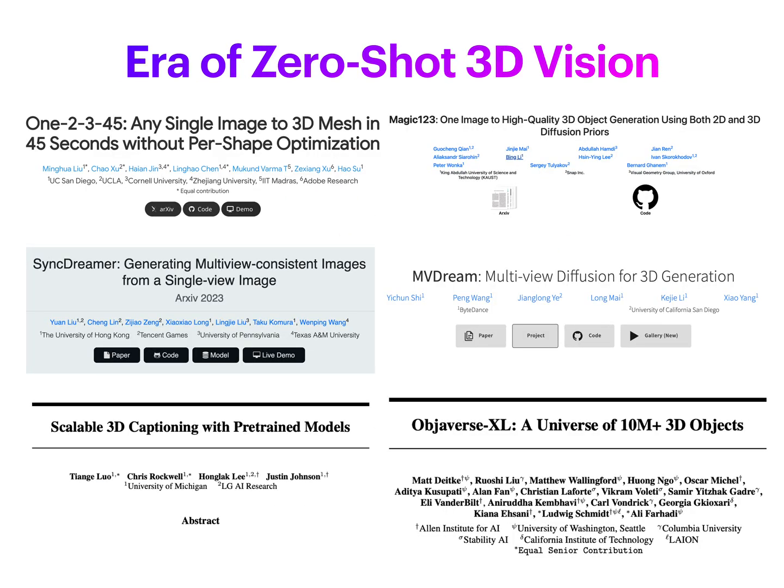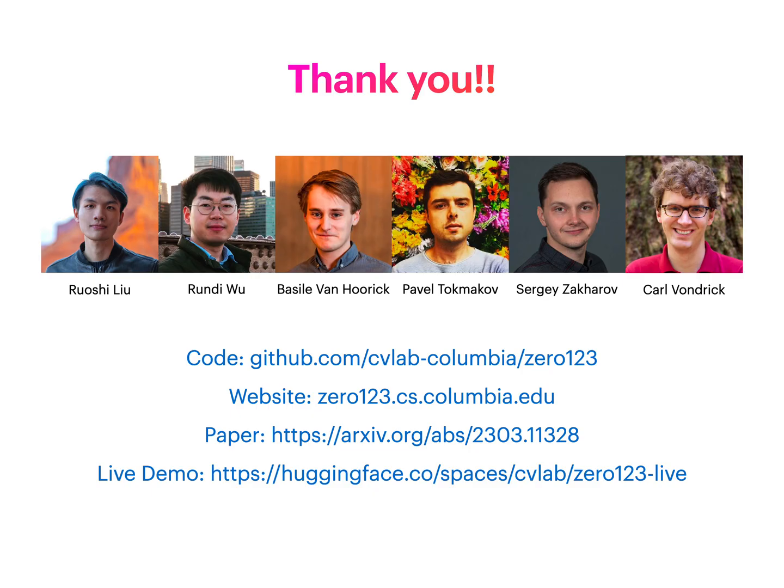0123 has opened up a new paradigm in zero-shot 3D computer vision and 3D asset generation, with many impactful follow-up works such as 12345 and Magic123, and many more to come. We are thrilled to see the fast progress of this emerging field and excited by the new research and industrial opportunities. Check out the related resources and our poster session at ICCV 2023.